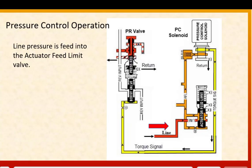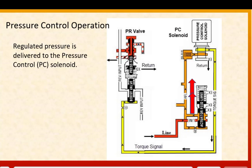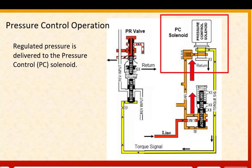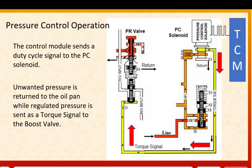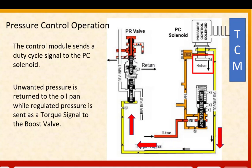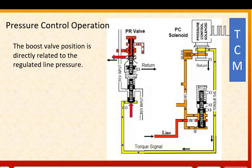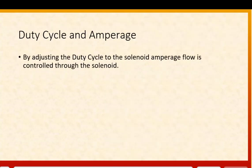Line pressure is fed into the actuator feed limit valve. Regulated pressure is delivered to the pressure control solenoid, also known as the PC solenoid. The control module sends a duty cycle signal to the PC solenoid. Unwanted pressure is returned to the oil pan while regulated pressure is sent as a torque signal to the boost valve. The boost valve position is directly related to the regulated line pressure.